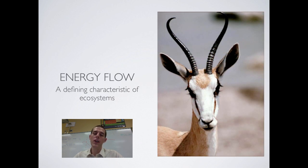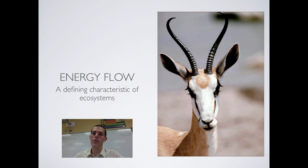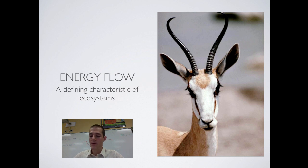One of the defining characteristics of an ecosystem is energy flow — just the flow of energy from the sun all the way through the ecosystem and back again. It all runs in a cycle.